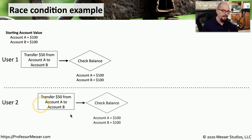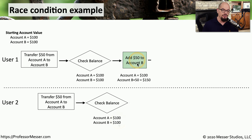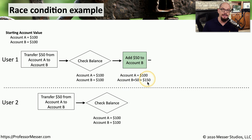Both account A and account B have $100. Just after that, user 2 also performs a check balance and also sees that account A is $100 and account B has $100 as well. Now user 1 is going to add $50 to account B, which means account A remains at $100, and account B increases to $150.